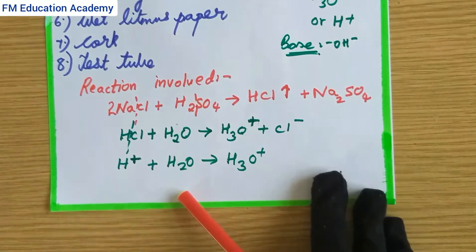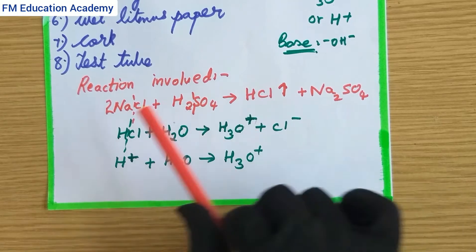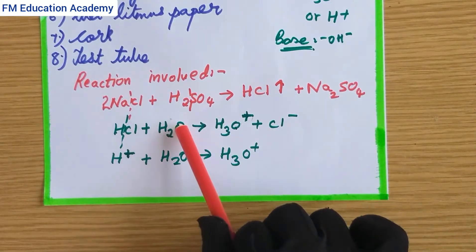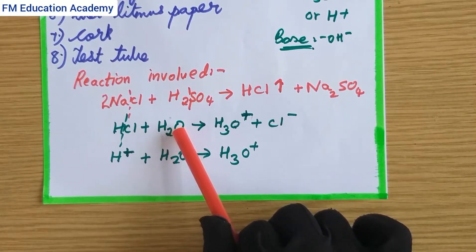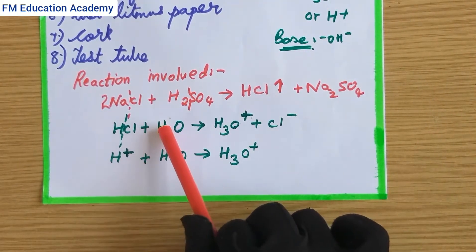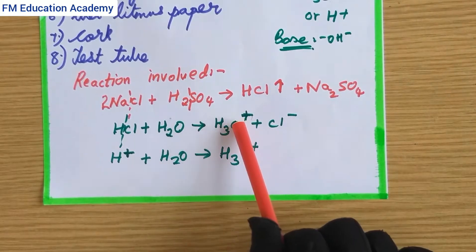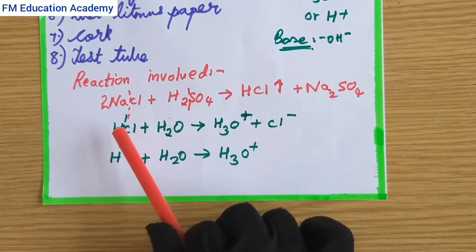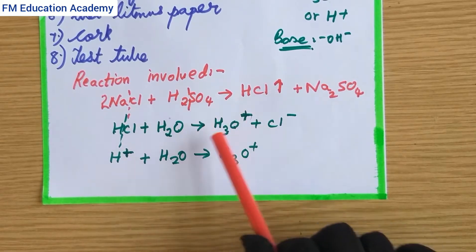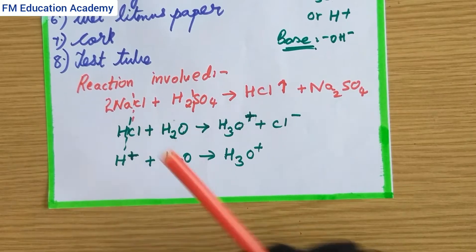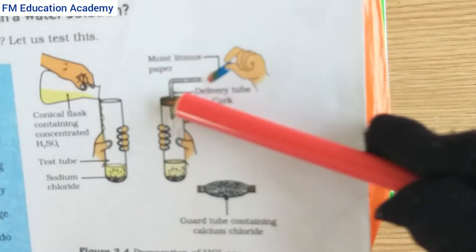The hydrochloric acid produced in the test tube passes through the delivery tube and combines with the water present on the wet litmus paper. When HCl combines with H2O, three hydrogen atoms bond with the oxygen to form H3O+ (hydronium cation) and Cl- ions. The water comes from the moisture in the wet litmus paper.